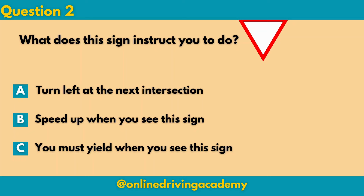So what does this sign instruct you to do? A. Turn left at the next intersection. B. Speed up when you see the sign. Or C. You must yield when you see the sign. The correct answer here will be C: you must yield when you see the sign.